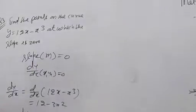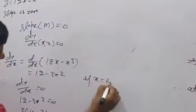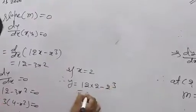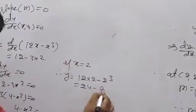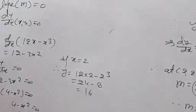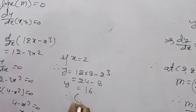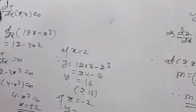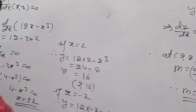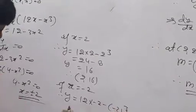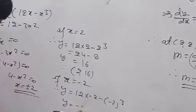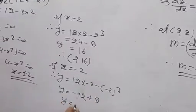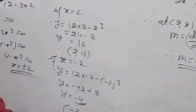Find the points. If x = 2: y = 12(2) minus 2³ = 24 minus 8 = 16. Therefore point is (2, 16). If x = −2: y = 12(−2) minus (−2)³ = −24 plus 8 = −16. Wait — y = −24 + 8 = −16? Actually y = −24 − (−8) = −24 + 8 = −16. Therefore point is (−2, −16).